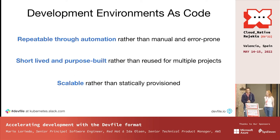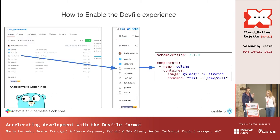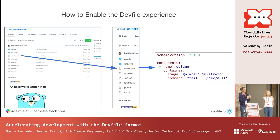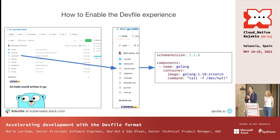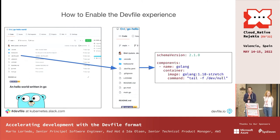So this introduces the DevFile. The DevFile is a YAML file format that is supposed to live with your source code. This is an example of a DevFile used for Go development — it's a simple one. The simplest DevFile you can have just references a default image for Go. By convention, it lives at the root of your source code and is called `.devfile.yaml`.